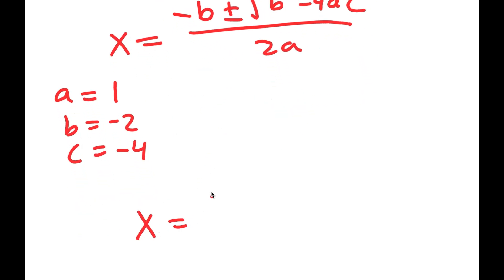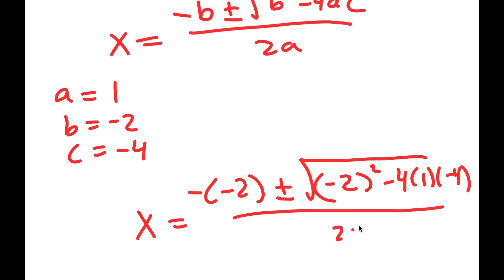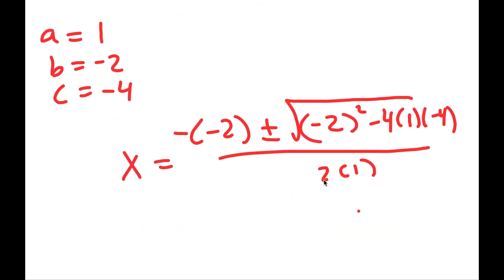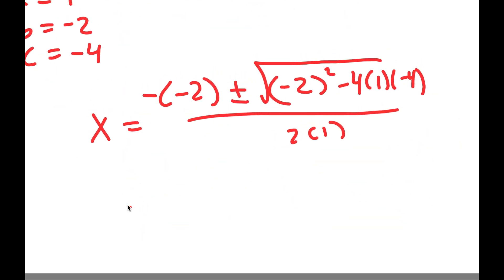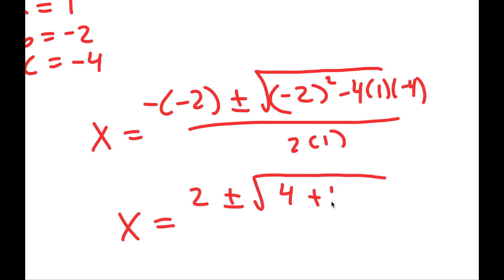So I get x is equal to negative of negative 2 plus or minus the square root of negative 2 squared minus 4 times 1 times negative 4, all over 2 times 1. From here I get x is equal to 2 plus or minus the square root of 4 plus 16, over 2.